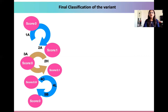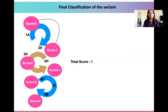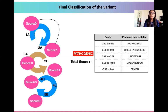Some users may just assign 1A and 2A and call it a final score, but going through the entire scoring metric we eventually land at a total score of 1, that is 0.9 and 0.1 from the other scoring matrices. If the total score is 0.99 or more, the proposed interpretation is pathogenic, so the final classification of this variant is pathogenic.